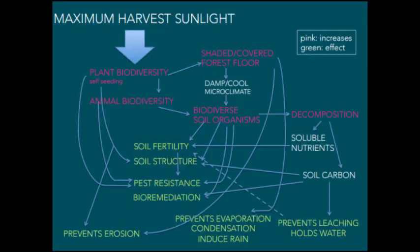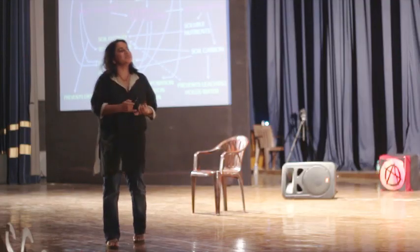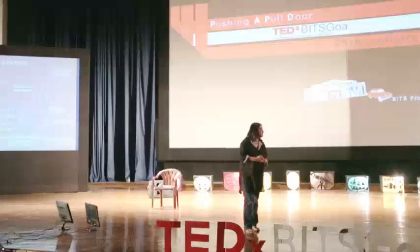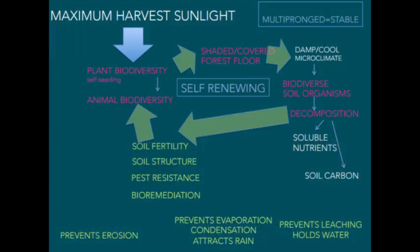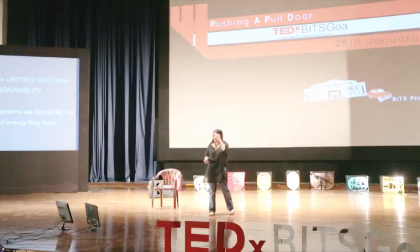Here's a complex slide meant to show that all you have to do is maximally harvest sunlight — you then have the energy to be sustainable and the rest follows: soil fertility, soil structure, pest resistance, bioremediation, prevention of erosion, prevention of evaporation, rain, and no leaching. This is why it's self-renewing: sunlight drives biodiversity, which drives shade and soil biodiversity, more fertility, more animals, more plants — a cycle that keeps getting bigger and better over time.